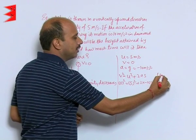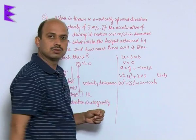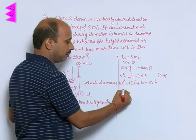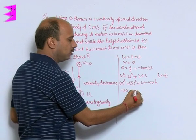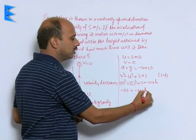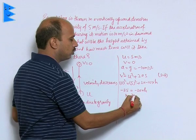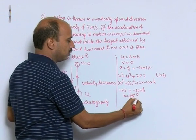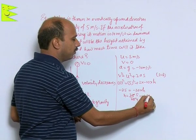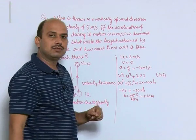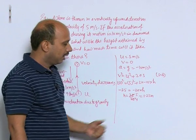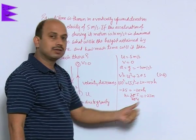So here I have written s is equal to h. Now we can solve it. It is here coming minus 25 is equal to minus 20 into h. So h is equal to 25 by 20, that you will be getting here 1.25 meter.